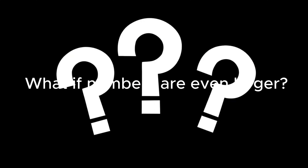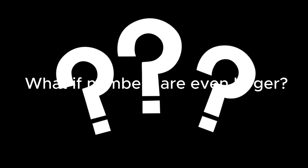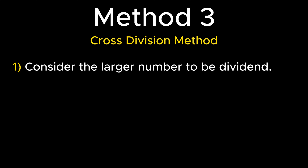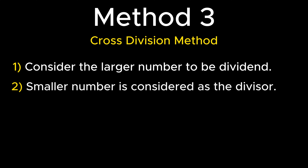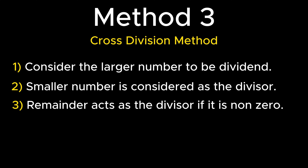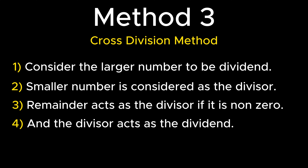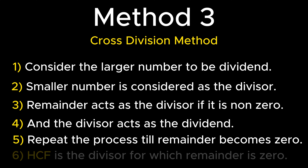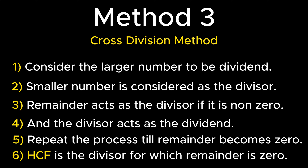If the HCF of a very large number — that is, a 4 or 5 digit number — needs to be determined, the prime factorization method will not be suitable as it involves a lengthy division process. To find HCF of large numbers, the cross division method is preferred. Under this method, the larger number is the dividend and the smaller number is the divisor. If the remainder is not zero, the remainder becomes the new divisor and the previous divisor becomes the new dividend. This process repeats until the remainder is 0, and the HCF is the divisor of the step in which the remainder becomes 0.